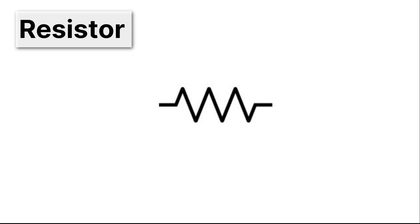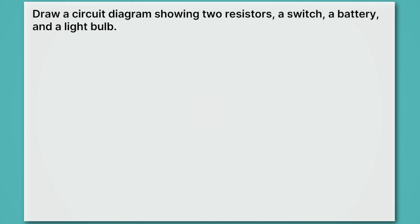Now let's practice drawing a circuit diagram. The question says: draw a circuit diagram showing two resistors, a switch, a battery, and a light bulb. There would be many correct answers — we just need to include the components listed. To draw a resistor, start with a wire, then go up to a peak — there are six total peaks: one, two, three, four, five, six — then back down to the wire. That's a resistor. Technically it has to have those six peaks.